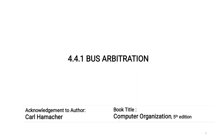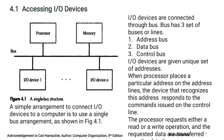Our sincere acknowledgement and thanks to author Carl Hamacher. In the figure, processor and memory are connected to IO devices — input devices and output devices — through the system bus. The system bus is the connecting lines between various parts of the computer system, consisting of address bus, data bus, and control bus. Altogether it is called the system bus.